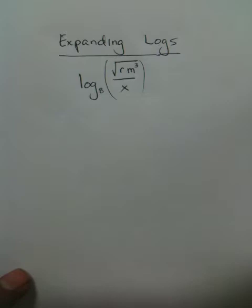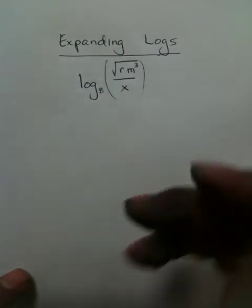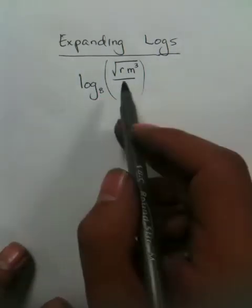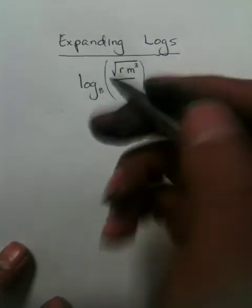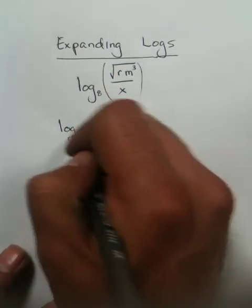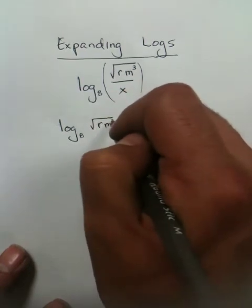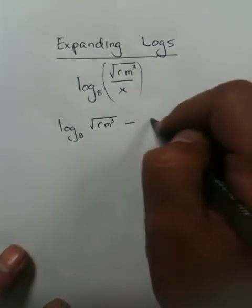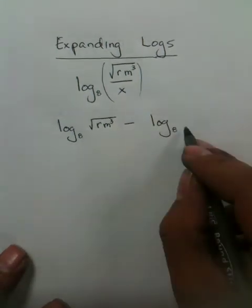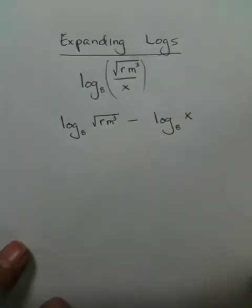Now there are two properties that will allow you to do this, actually three properties. One property at a time: you want to get rid of this fraction, and the way to get rid of that fraction is the log property says that if you take your numerator, you may subtract it from the same type of log, meaning the subscript of 8, by its denominator.